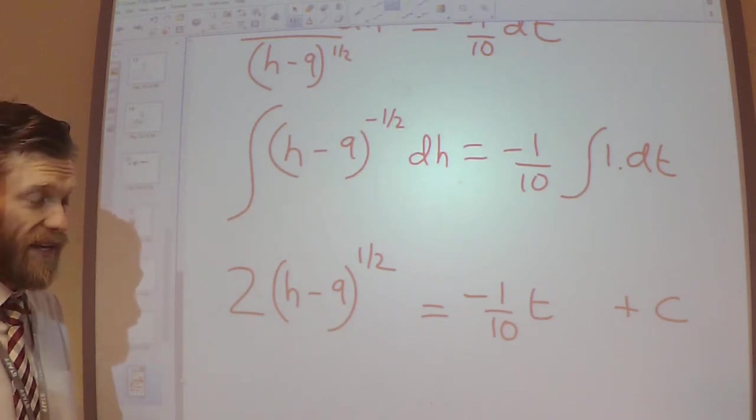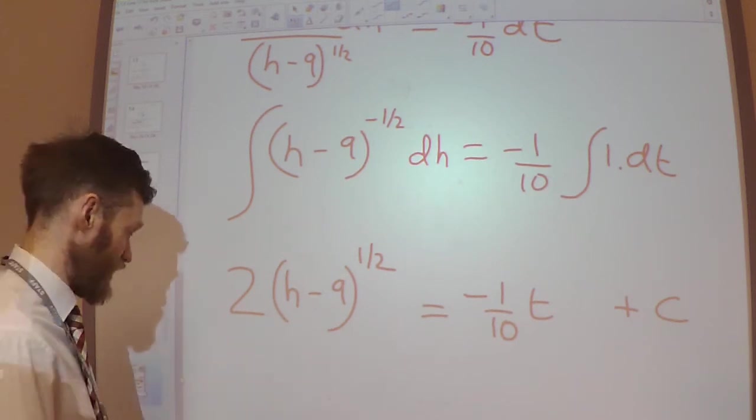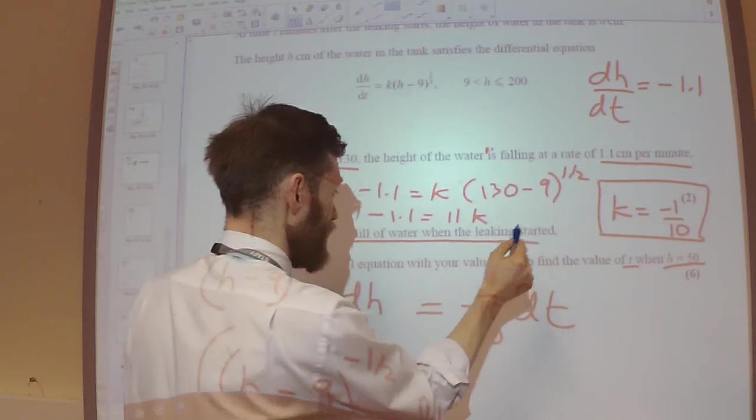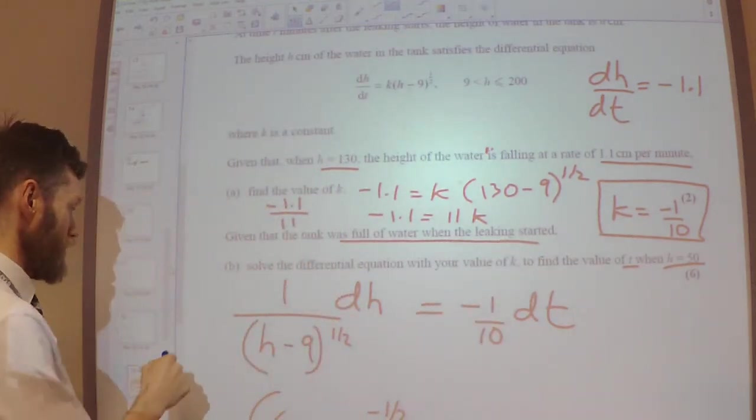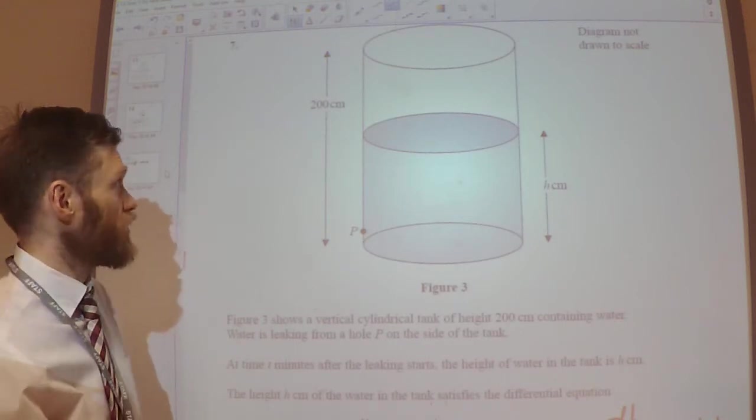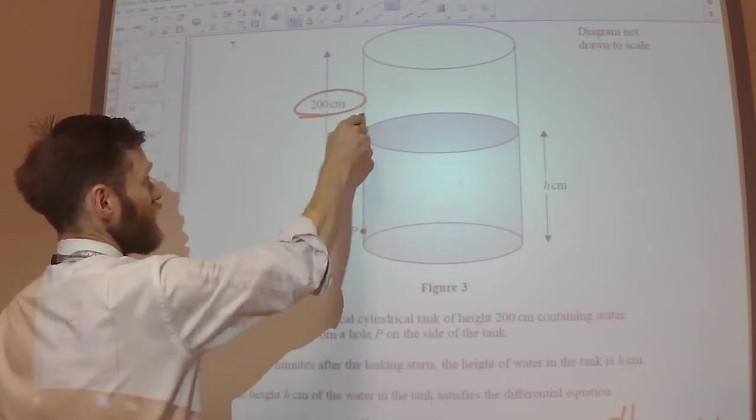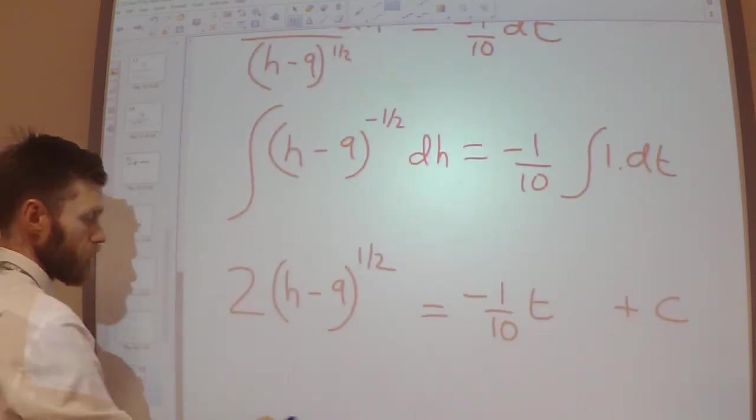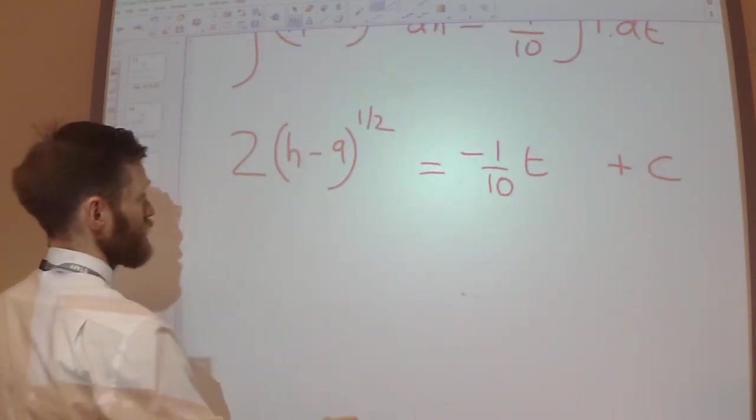Right, well, we were told at the beginning of this process that the tank was full when the leaking started. So that means when the leaking started, as in T equals 0, the height was 200. So, let's substitute that in.